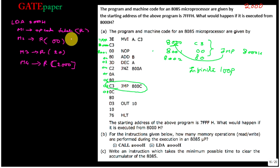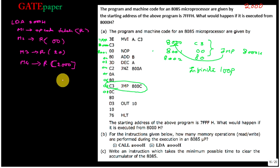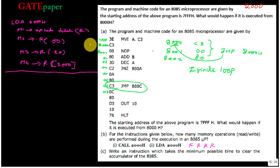So LDA requires four machine cycles — that means four memory operations. The opcode fetch is also treated as reading data from memory, so all four are memory read operations. The pattern can be written as F, R, R, R — where F means opcode fetch with 4 T-states and the other three are memory read operations.